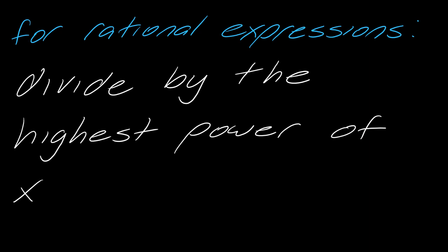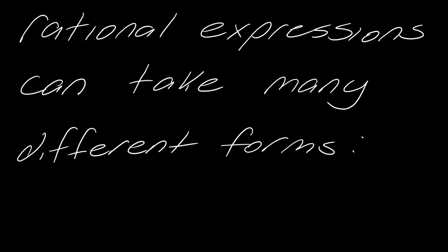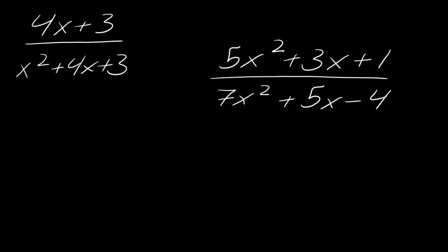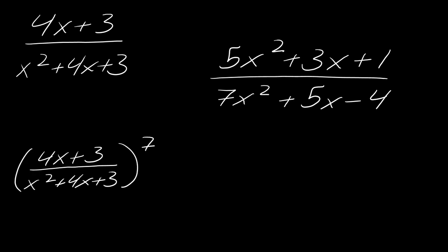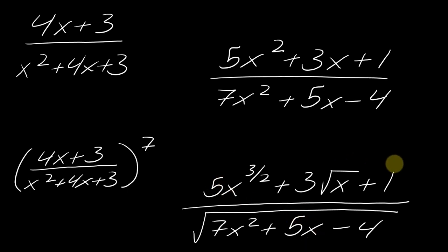Before we get started, rational expressions can take many different forms. These two examples are probably what people think of — a polynomial on top and a polynomial on bottom. But the techniques I'm talking about don't have to just look like this. They can apply to things like a rational expression raised to the seventh power, or even expressions with rational exponents. The same technique can actually be extended to these ideas, and sometimes people don't realize that.